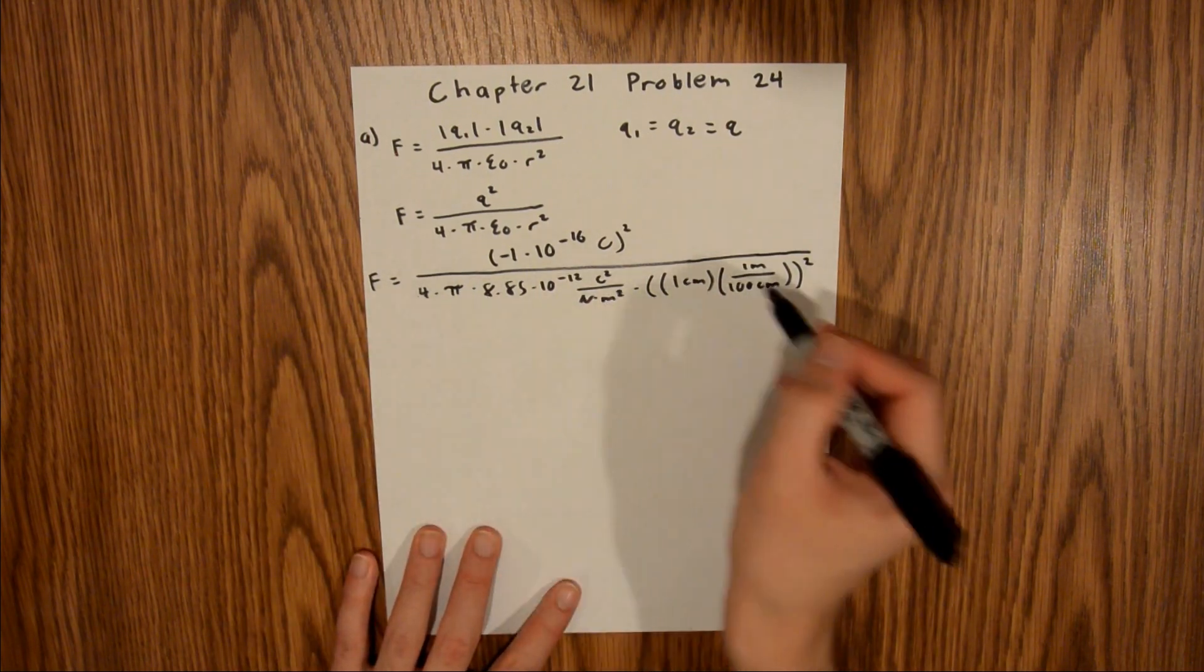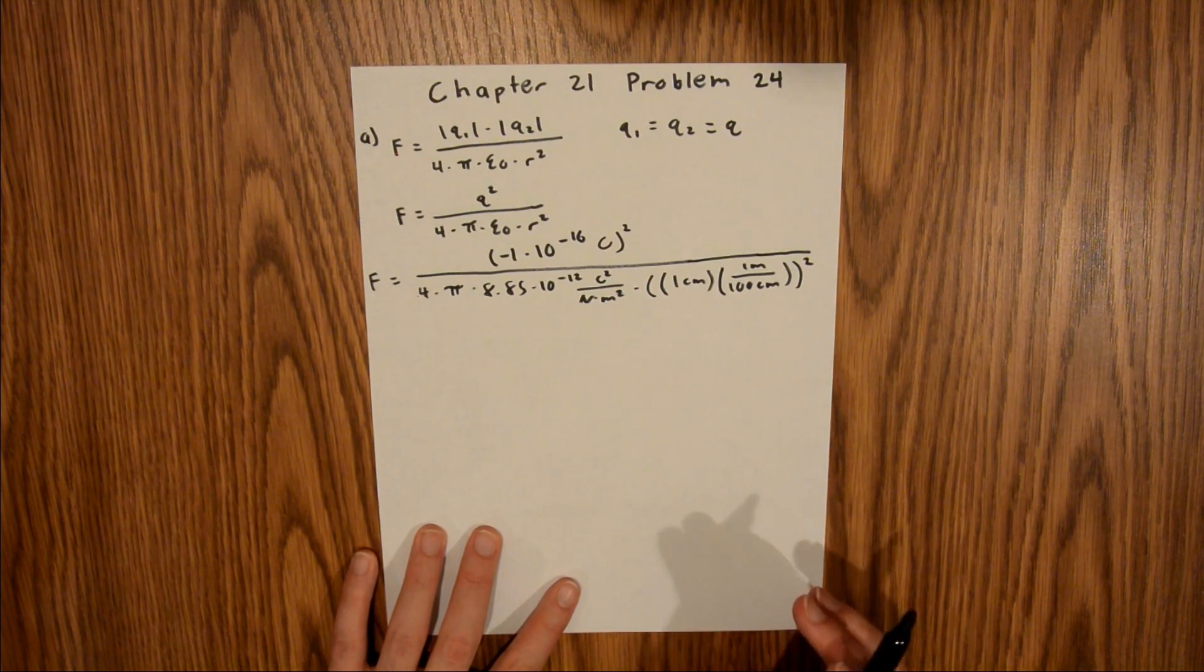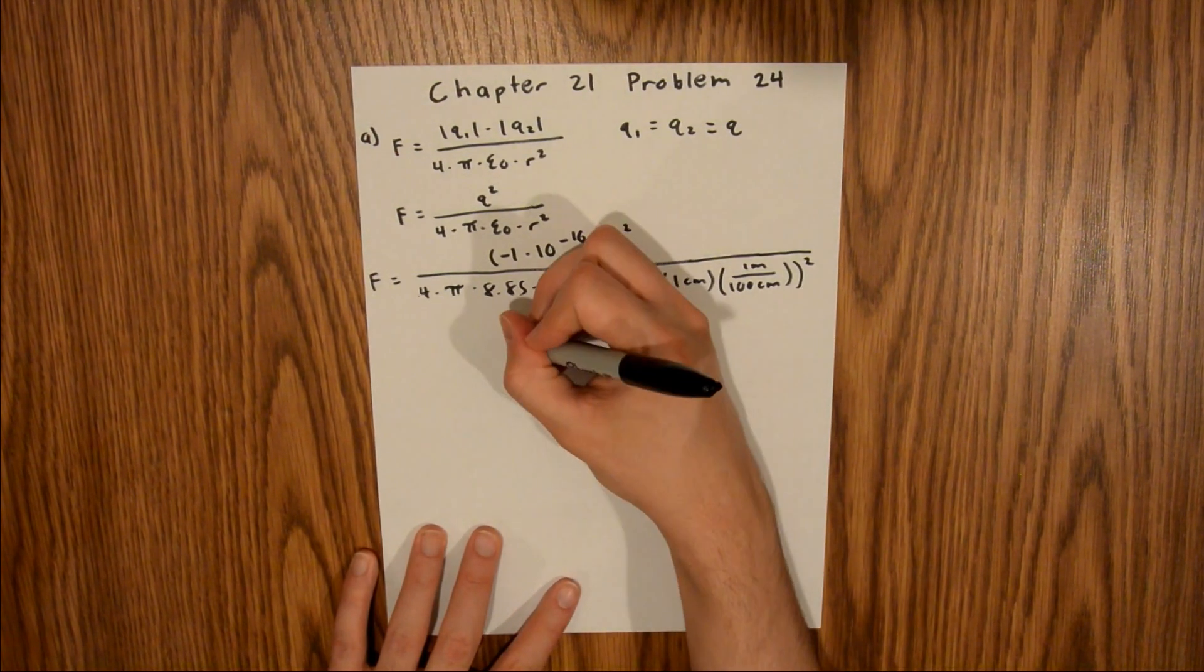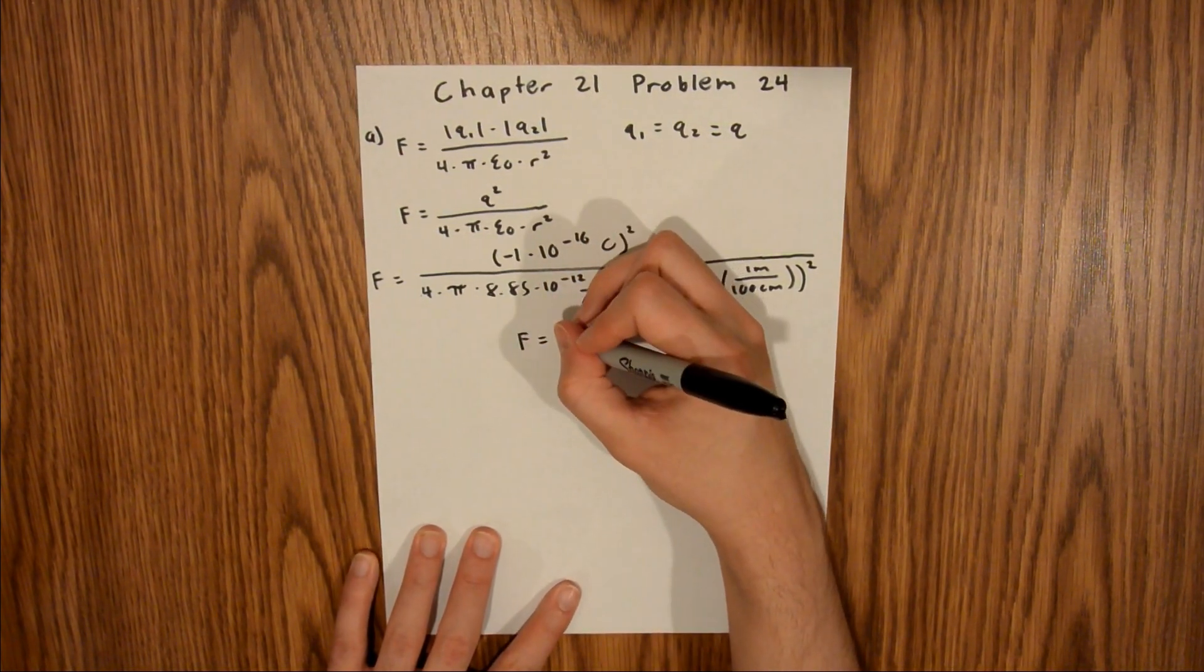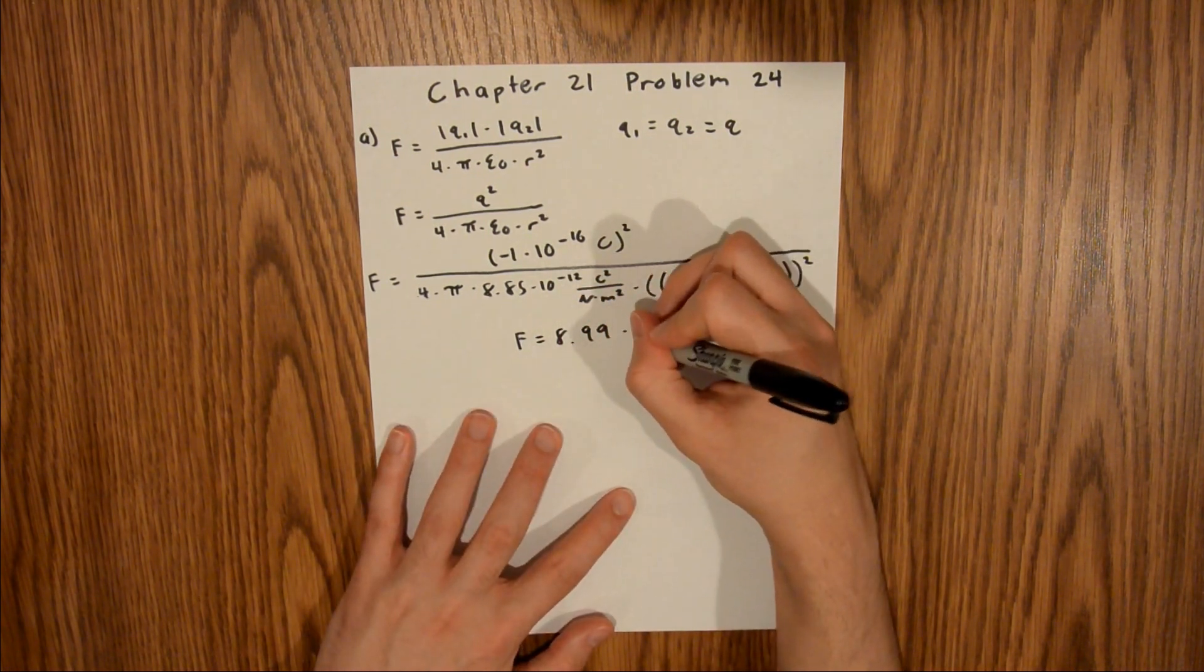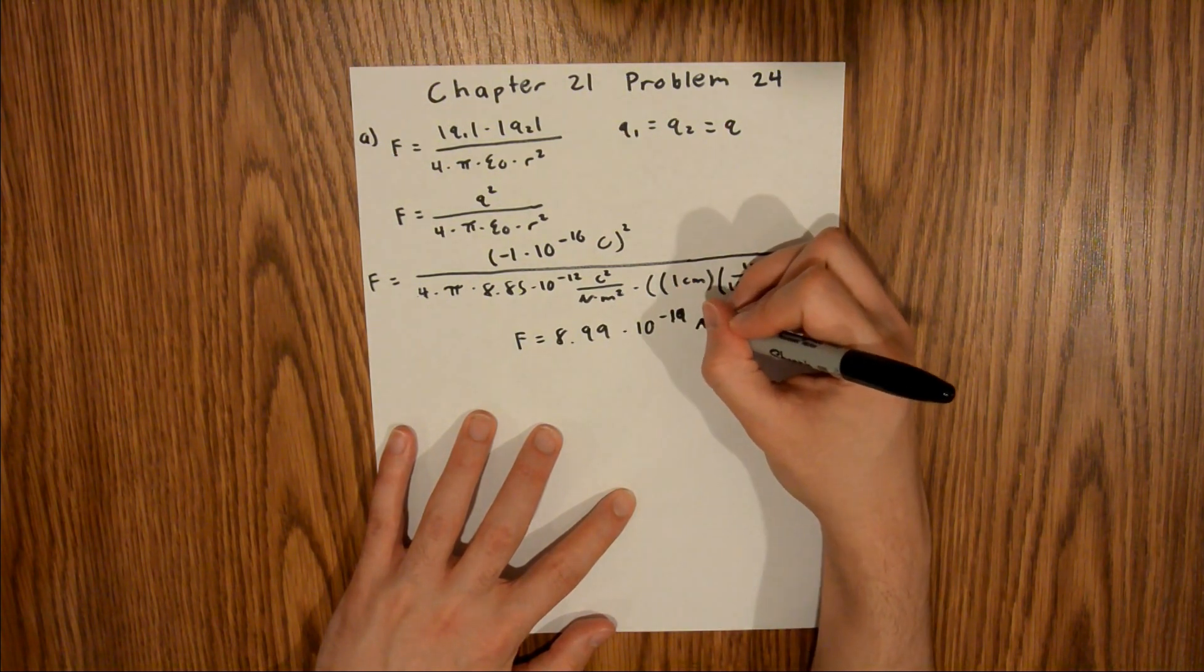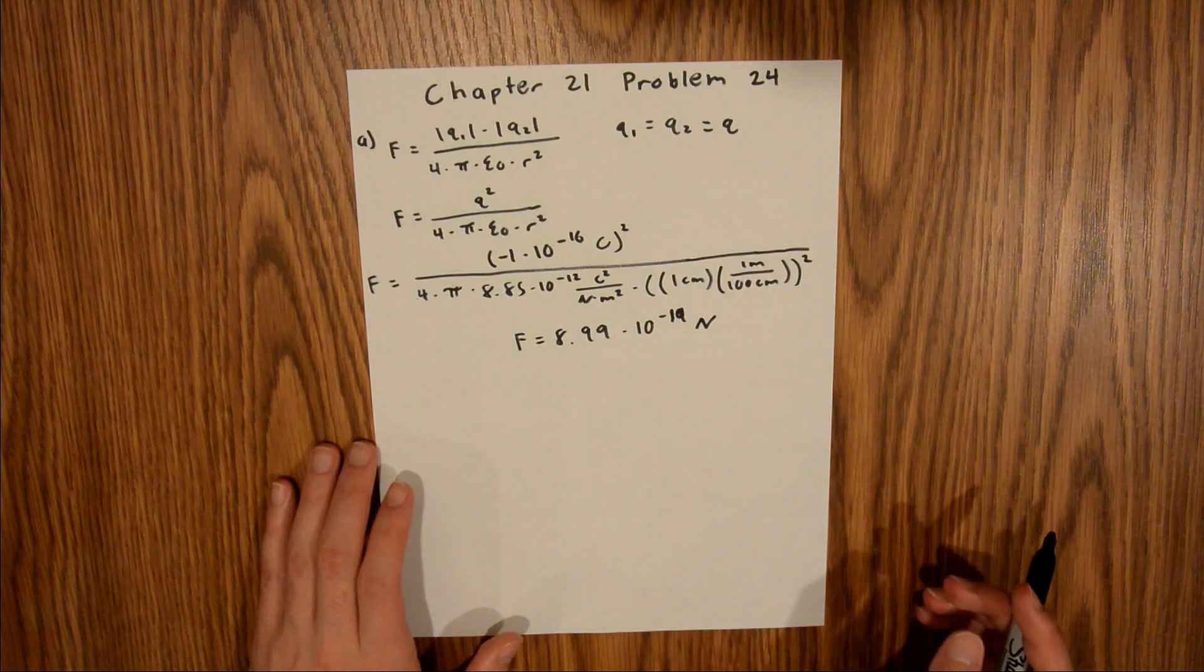Now if you plug all of that into your calculator, you will find that the electrostatic force between these two water droplets is 8.99 times 10 to the negative 19th newtons. That is your final answer for Part A.